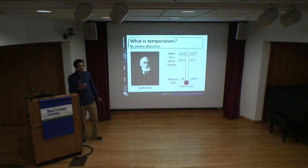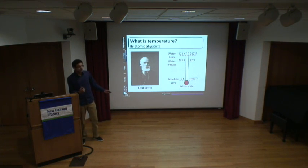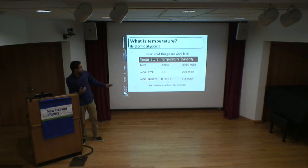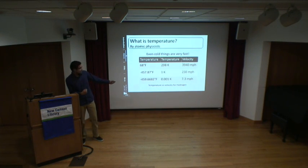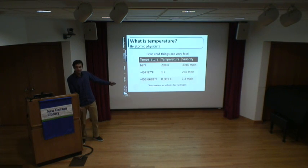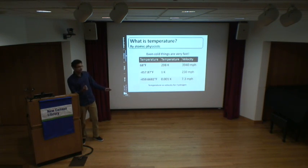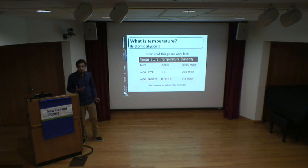You really cannot have less motion than no motion, so you cannot go colder than absolute zero. To give a sense of scale: at room temperature, hydrogen moves at about 4,000 miles per hour. Even cooling it to one Kelvin, it's still moving at 230 miles per hour. You really have to cool it to a tiny fraction above absolute zero to get it to a reasonable slow speed.